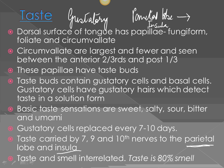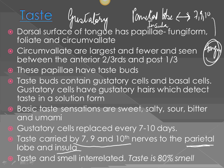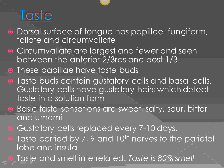Which nerves carry taste to the parietal lobe? Taste is carried by the 7th, 9th, and 10th cranial nerves. For the 7th cranial nerve, one of the functions is to carry taste from the anterior two-thirds. The 9th cranial nerve carries taste from the posterior one-third, and the 10th from the posterior-most part. Taste is carried from the tongue to the parietal lobe and the insula.